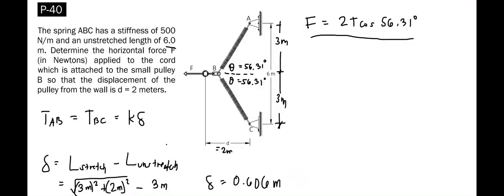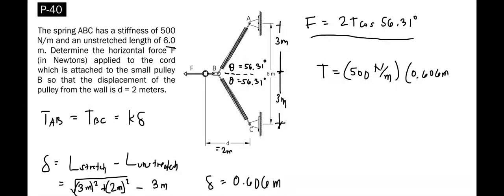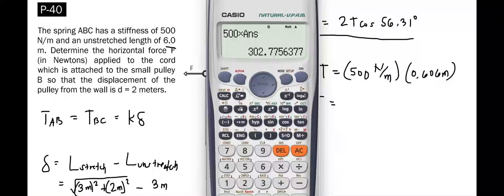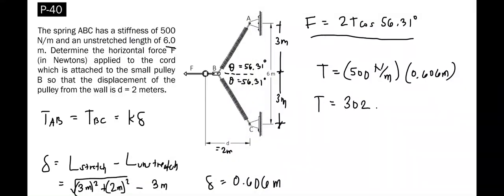Now we can solve for tension T, equal to 500 newtons per meter times 0.606 meters. We get T equal to 500 times delta, that is 302.776 newtons.